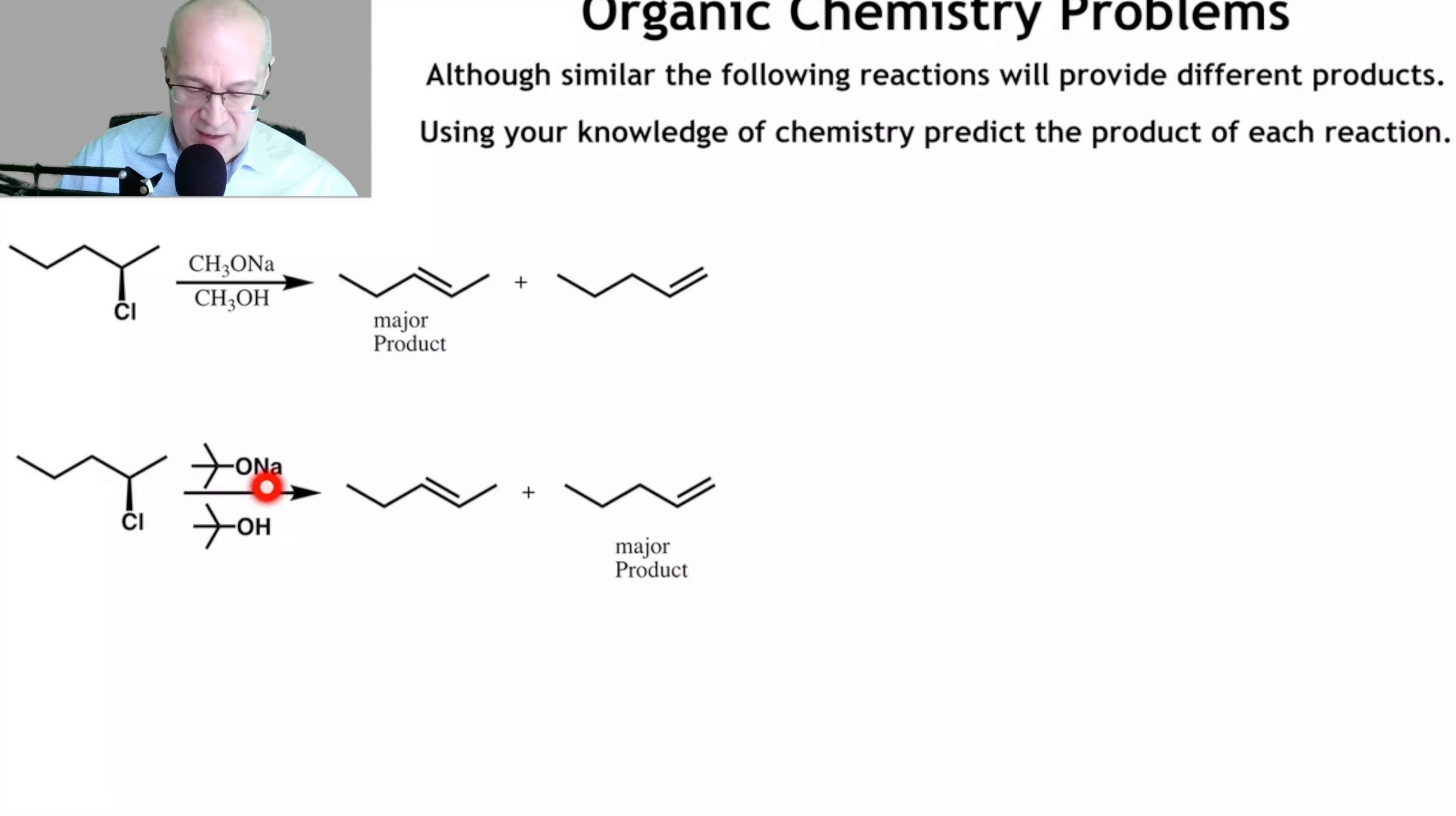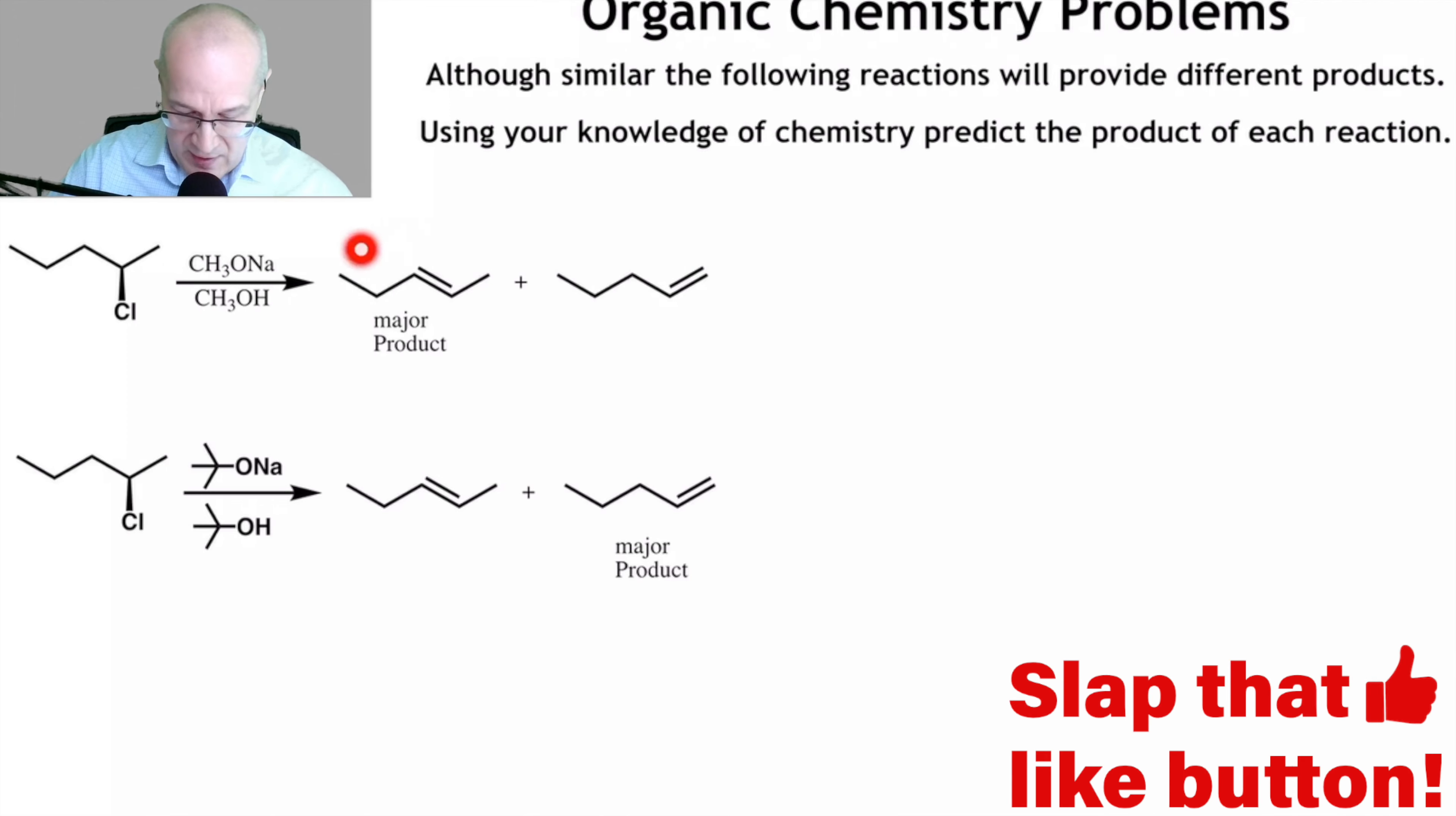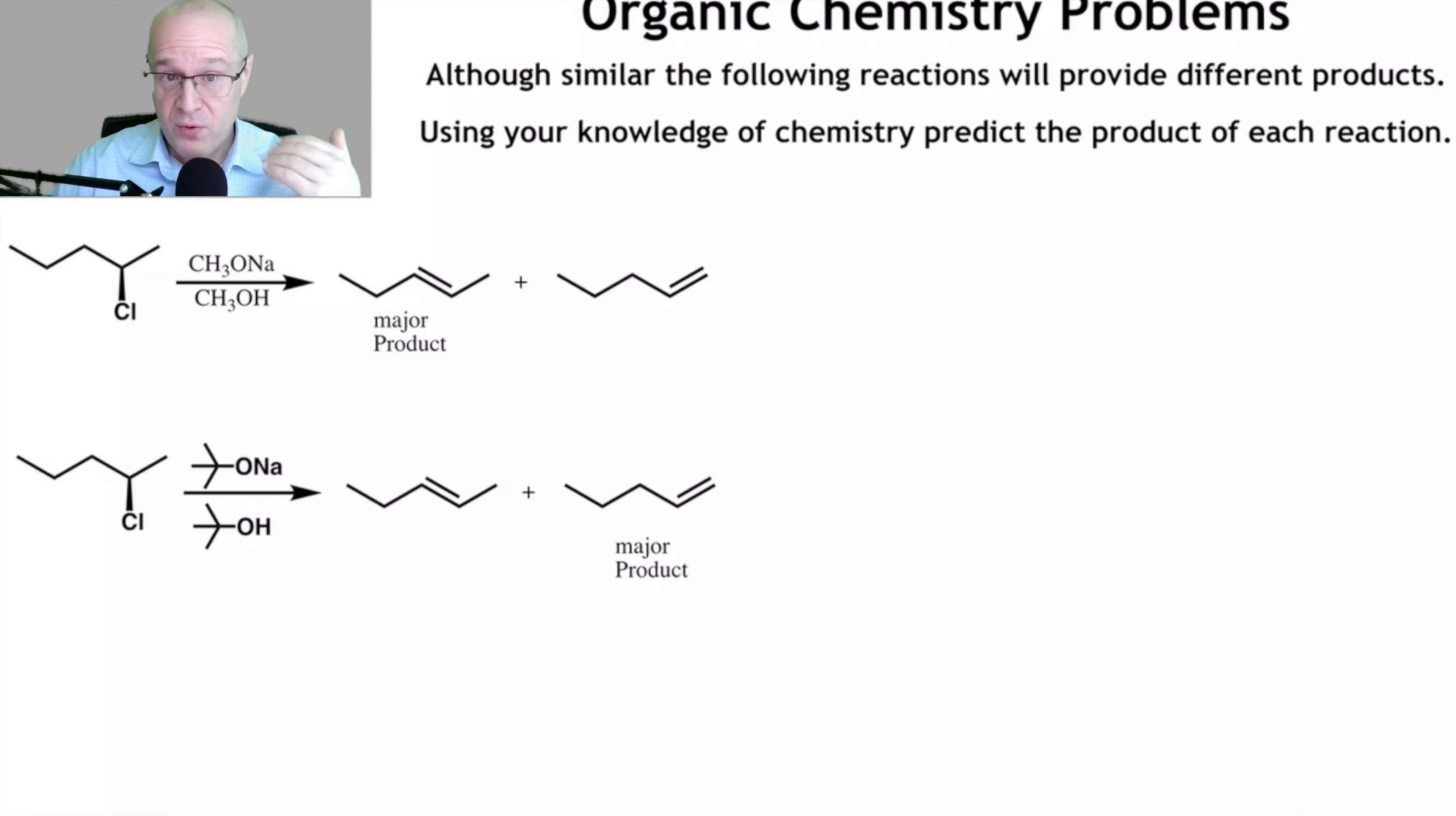So now the bulky base gives us the opposite. The bulky base gives us the least substituted double bond. And what's going on here? This is interesting. First of all, don't forget, E2 eliminations must be anti-coplanar. So let's set up the anti-coplanar here for this one.